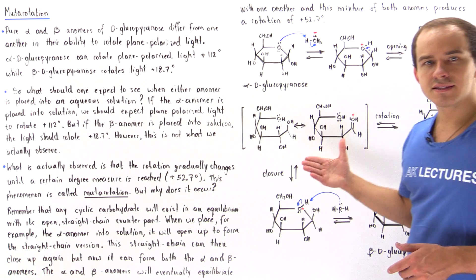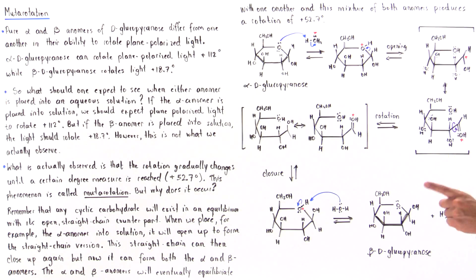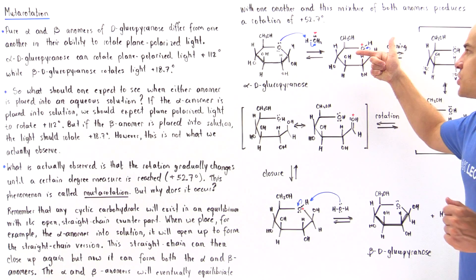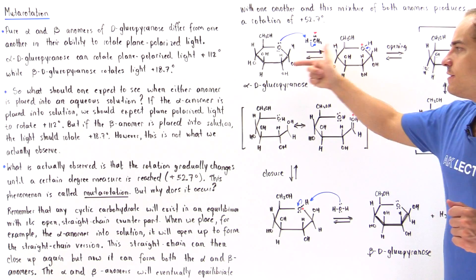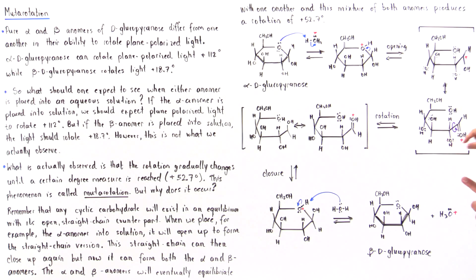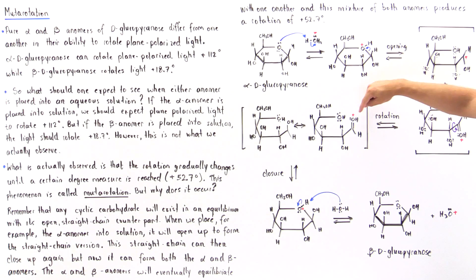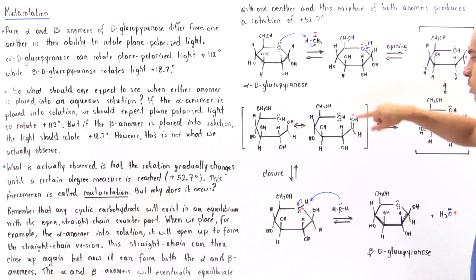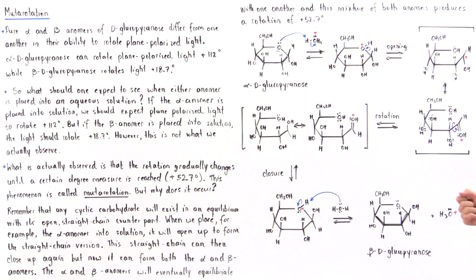In the next step, we can do one of two things: we can close our chain and reform our alpha-D-glucopyranose, or we can have a rotation take place first. If this bond between this carbon and this carbon rotates, then our OH will basically end up on top, while the H will end up pointing to the bottom.